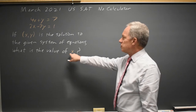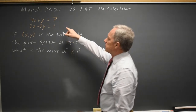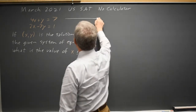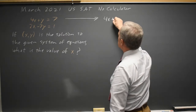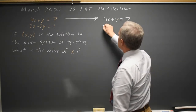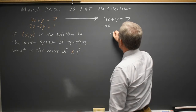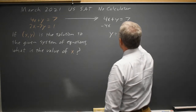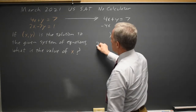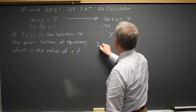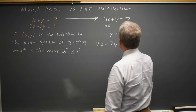Since they're asking for the value of x, probably the easiest way is to solve this first equation for y. I have 4x plus y equals 7, subtracting 4x from both sides. I get y equals negative 4x plus 7 and then I have 2x minus 7y equals 1.